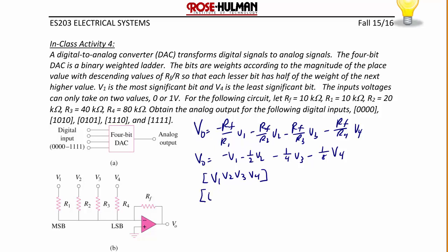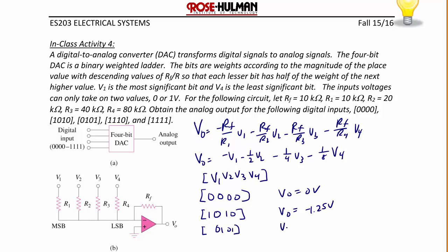For input (0,0,0,0): V_O equals 0. For input (1,0,1,0): V_O equals negative 1.25 volts. For input (0,1,0,1): V_O equals negative 0.625 volts. For input (1,1,1,0): V_O equals negative 1.75 volts. For input (1,1,1,1): V_O equals negative 1.875 volts.